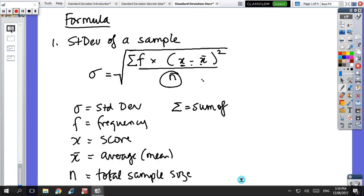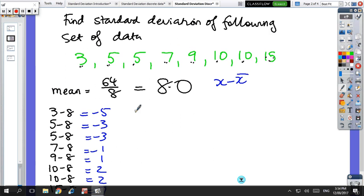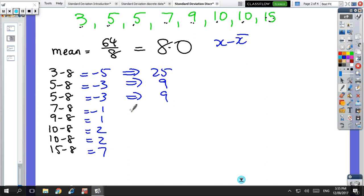And in the formula, I have to take x minus x bar and I have to square it. So when you square it, you get 25, you get 9, you get 9, you get 1, you get 1, you get 4, you get 4, and you get 49.